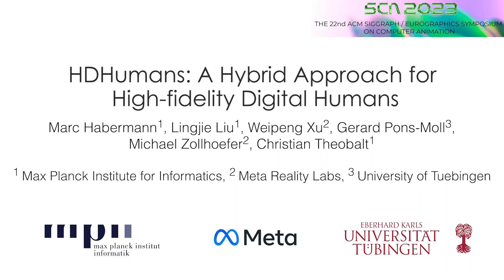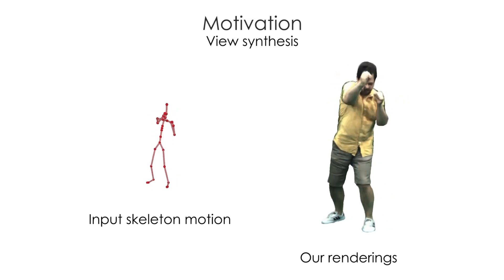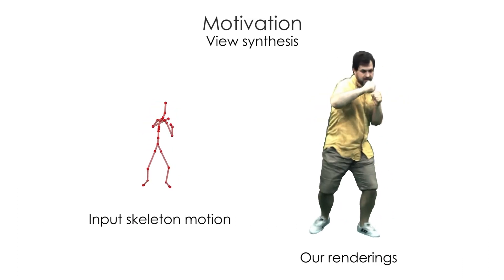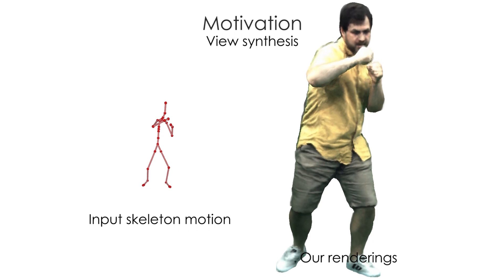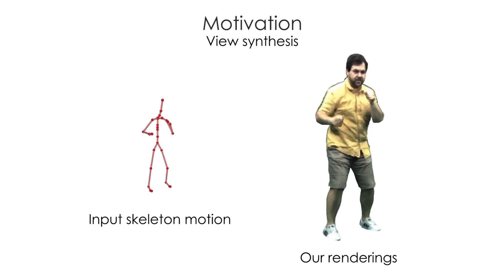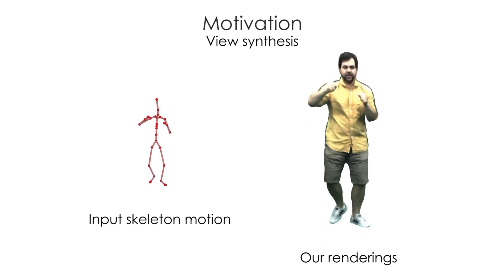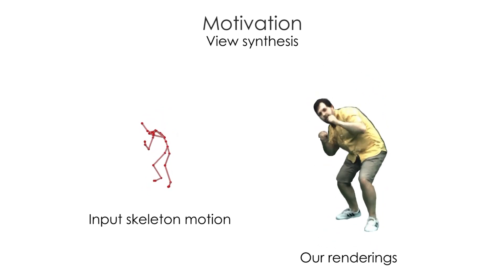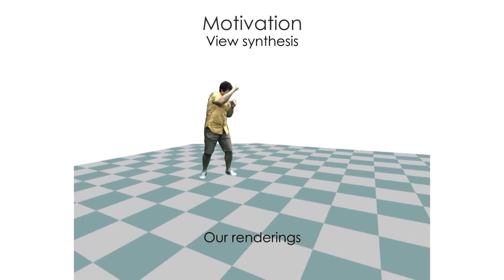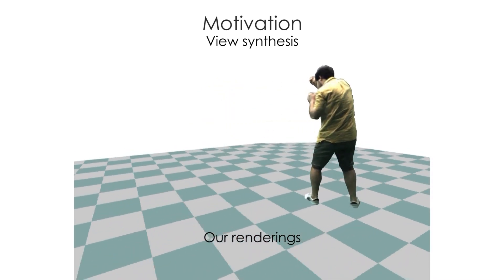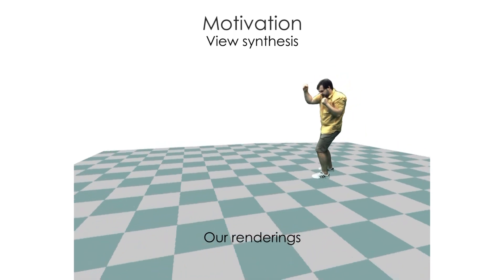We present HD-Humans, a hybrid approach for high-fidelity digital humans. Our approach is the first method for character synthesis that jointly produces an accurate 3D deforming surface and highly photorealistic images of novel views and motions not seen at training time. At a technical core, our method tightly integrates a classical deforming character template with neural radiance fields.